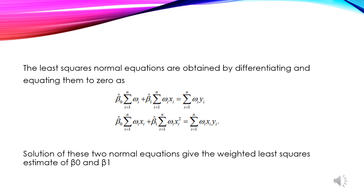The normal equations for WLS are: beta0 hat times Σwi plus beta1 hat times Σwi·xi equals Σwi·yi; and beta0 hat times Σwi·xi plus beta1 hat times Σwi·xi² equals Σwi·xi·yi. Solving these normal equations gives the weighted least squares estimates of beta0 and beta1.